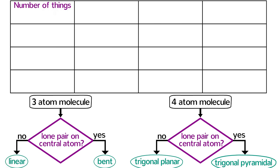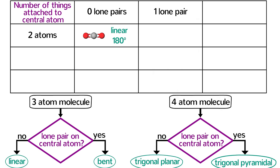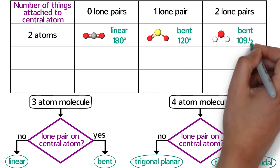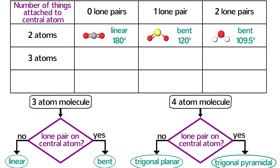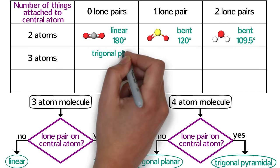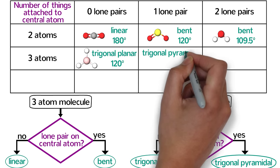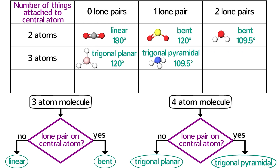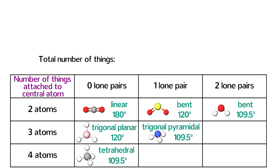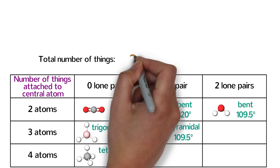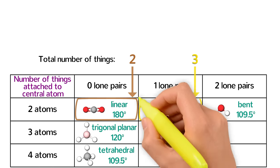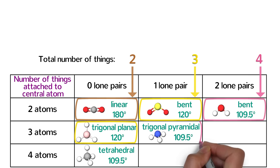Another way to summarize these shapes is by counting the number of things attached to the central atom. In a three-atom molecule, there are two atoms attached to the central atom. If there are zero lone pairs, the shape is linear and the bond angle is 180 degrees. If there is one lone pair, the shape is bent and the bond angle is approximately 120 degrees. If there are two lone pairs, the shape is also bent but the bond angle is closer to 109.5 degrees. In a four-atom molecule, if there are zero lone pairs the shape is trigonal planar at about 120 degrees. If there is one lone pair, the shape is trigonal pyramidal at about 109.5 degrees. For five atoms, the shape is tetrahedral at 109.5 degrees. Note that if the total number of things on the central atom is the same, the bond angle will also be the same.